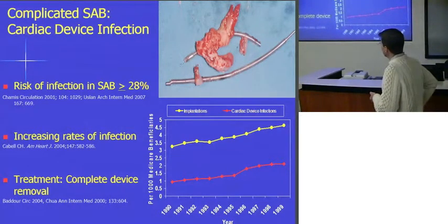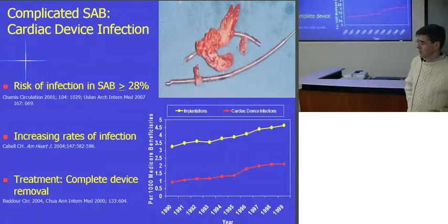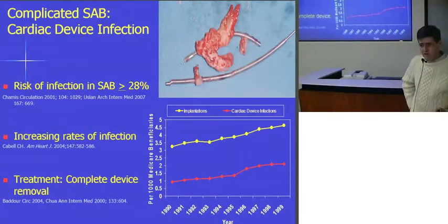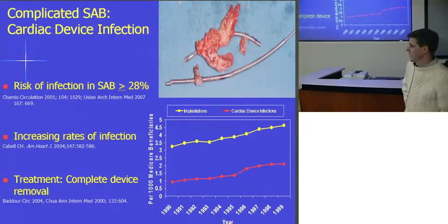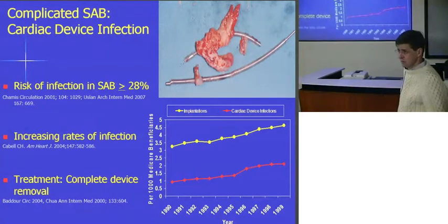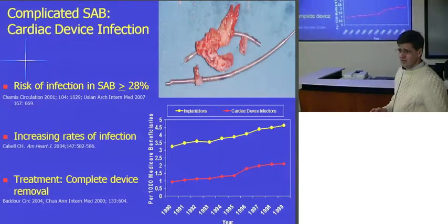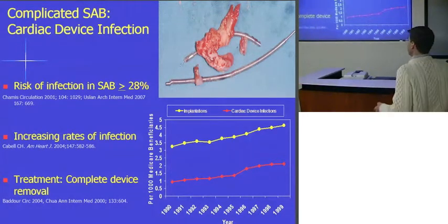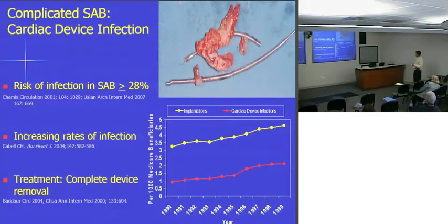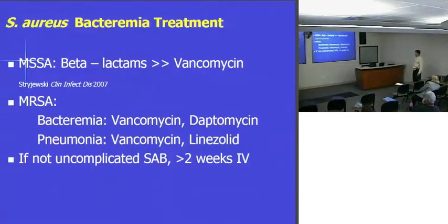The rates have gone up dramatically. In large part this has to do with the number of devices being implanted, the number of sites performing implantation — many with less experience — and the patients in whom the devices are being implanted who have more comorbidities and are sicker. This is a cardiac lead with a huge vegetation — probably one of the biggest you'll ever see. You can imagine the difficulty of trying to treat something like that medically — it's just not going to happen. So the only way to get rid of such infections is to get rid of the device.